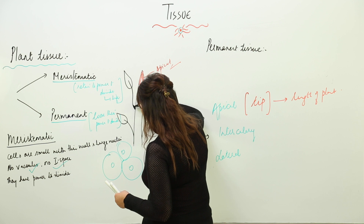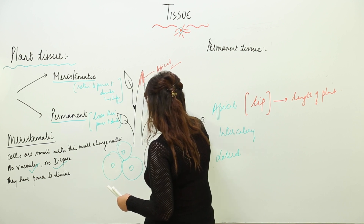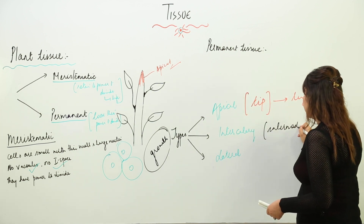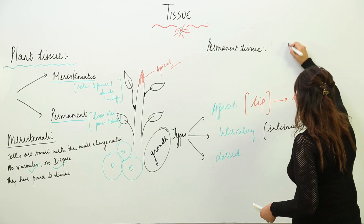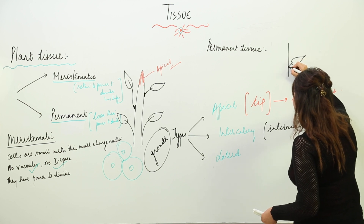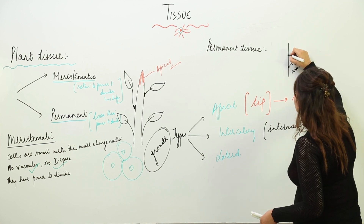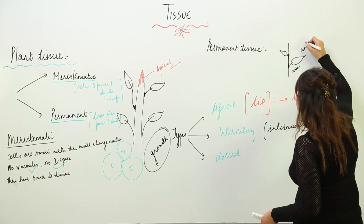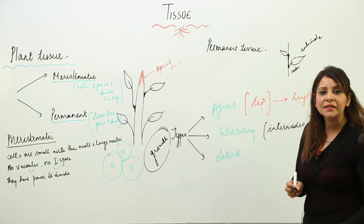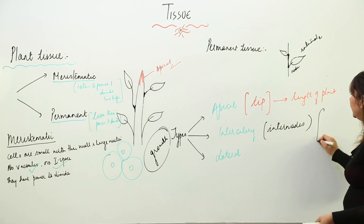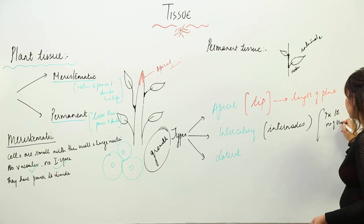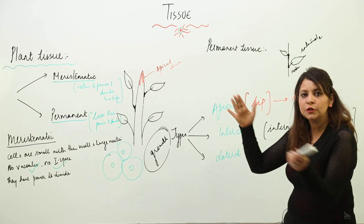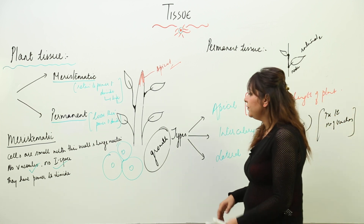Intercalary meristem is present at the internodes. From where the leaf arises is called the node, and the distance between two nodes is the internode. Intercalary meristem is present at the internodes, and its function is to increase the number of branches and also the distance between branches.